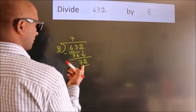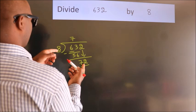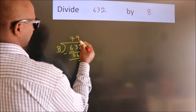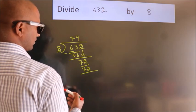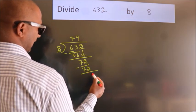When do we get 72 in the 8 table? 8 times 9 equals 72. Now we subtract. We get 0.